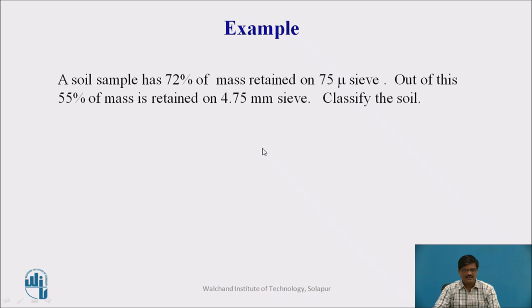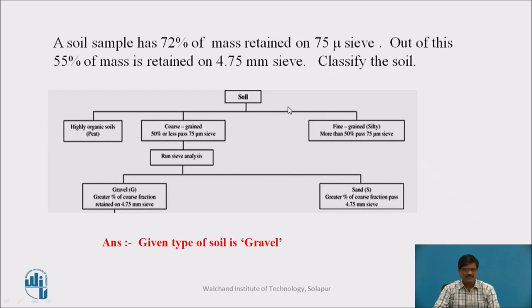Now, I will request you to take a pause and solve this problem. A soil sample has 72% of mass retained on the 75-micron sieve. Out of this, 55% of mass is retained on the 4.75 mm sieve. Classify the soil. Welcome back. Since more than 50% is retained on the 75-micron sieve, it is a coarse-grained soil. Then, since more than 50% is also retained on the 4.75 mm sieve, it is classified as gravel.